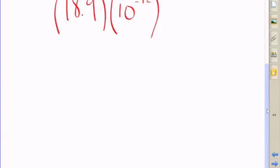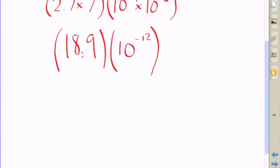We are going to be able to turn this into scientific notation simply by moving the decimal point once to the left so it gets into that ones place. So we have 1.89.